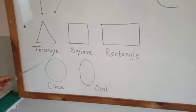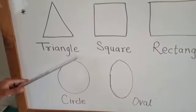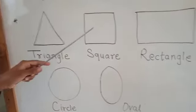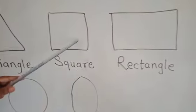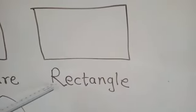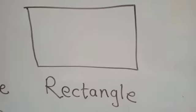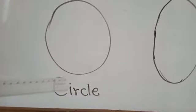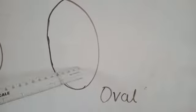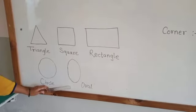The basic plane shapes are: triangle — T-R-I-A-N-G-L-E; square — S-Q-U-A-R-E; rectangle — R-E-C-T-A-N-G-L-E; circle — C-I-R-C-L-E; and oval — O-V-A-L. These are the basic shapes.